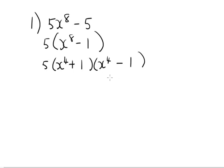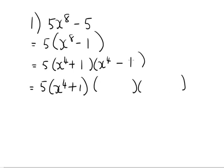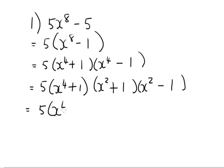What's interesting about this one is that I can factorize further as well. I've got x to the power of 4 plus 1, and then applying the same principle — there are two terms, there's a negative in the middle, both are perfect squares — so it's plus and minus. The square root of x to the power of 4 is x squared, and I've got 1 and 1. But this here is also a difference of two squares because that's a perfect square, that's a perfect square, and there's a negative in the middle. This part is not a DOTS because of the plus sign in the middle — there has to be a negative sign.